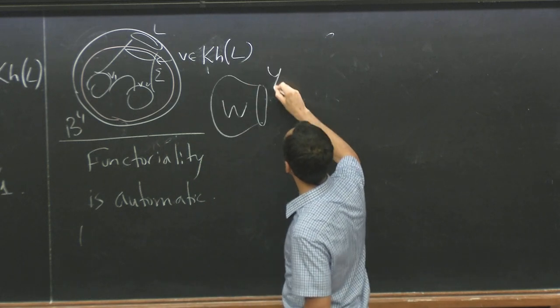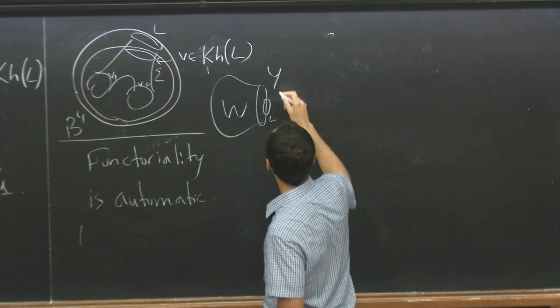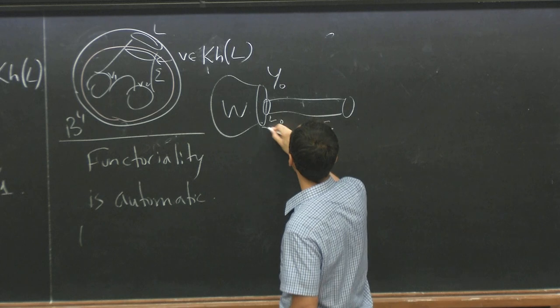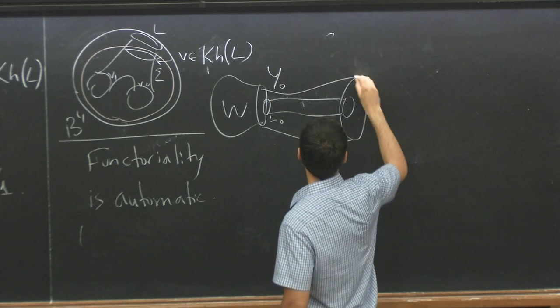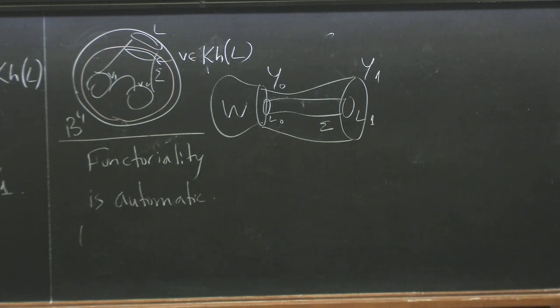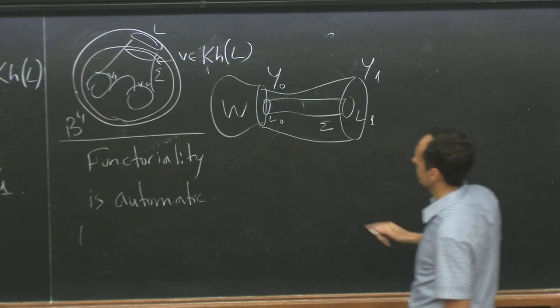yes. Let me say the main thing. This also has the advantage that functoriality is automatic. So, if I have a cobordism, if I have, well, first of all, W and Y, and I have a link, let's say Y0 and L0, and I have a surface sigma. I have a cobordism to some other link L1 in here.